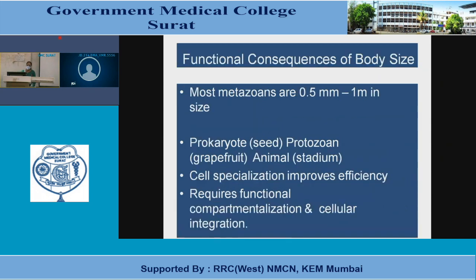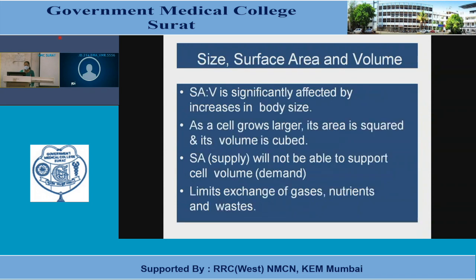Most metazoans are 0.5 mm to 1 mm in size. Cell specialization improves efficiency but requires functional compartmentalization and cellular integration. Size affects surface area and volume significantly: as a cell grows larger, its area is squared and its volume is cubed, so supply cannot support cell volume demand, limiting exchange of gases, nutrients, and wastes.